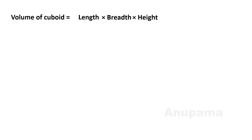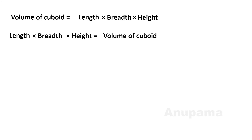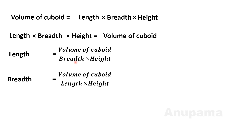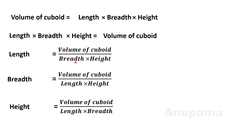We know that volume of cuboid equals length × breadth × height. But what if the volume is given and you need to find one of the dimensions? We can derive the formulas ourselves: length = volume ÷ (breadth × height), breadth = volume ÷ (length × height), and height = volume ÷ (length × breadth). When we transfer values to the other side, they become division.